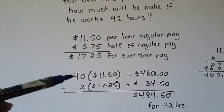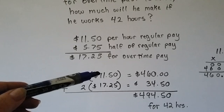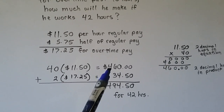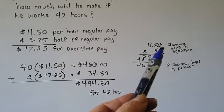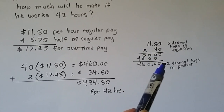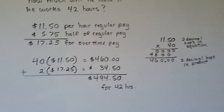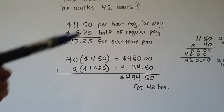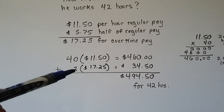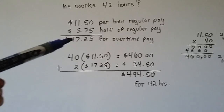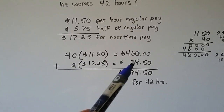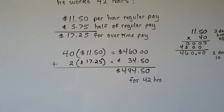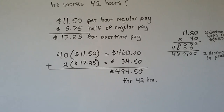He works 40 hours at $11.50 per hour — we do our little math on the side — that's $460. There are two decimal hops in the equation, so we have to put two decimal hops in the product. So he makes $460 for regular pay, and he's got 42 hours, so we have two more hours at the time and a half rate of $17.25. That comes out to $34.50. We add them together and for 42 hours he makes $494.50.